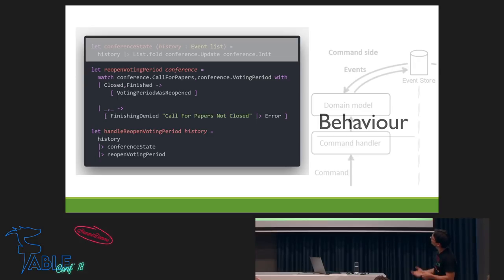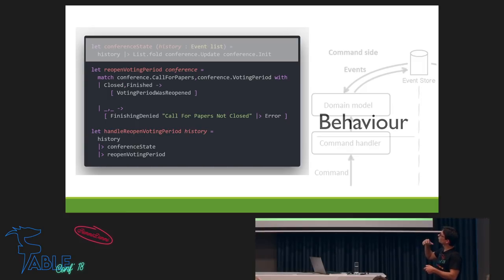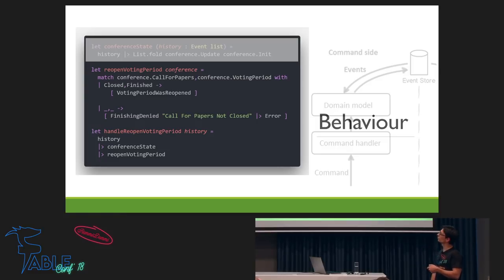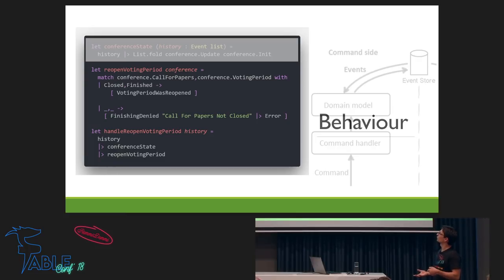We pattern match over a tuple of the conference. If the call for papers is closed and the voting period is finished, we return a list of events — in this case just 'voting period was finished.' In all other cases, the finishing was denied because, for example, the call for papers was not closed. This is where the behavior resides: based on specific constraints, we give back a list of events. We don't throw an exception because the call for papers isn't closed — it's just a domain error.